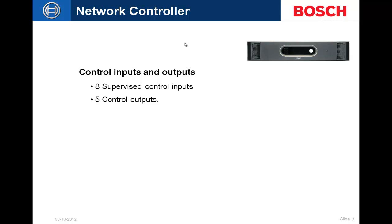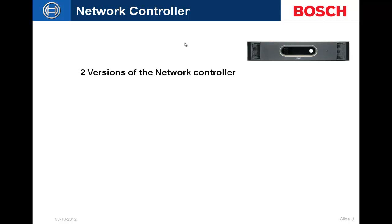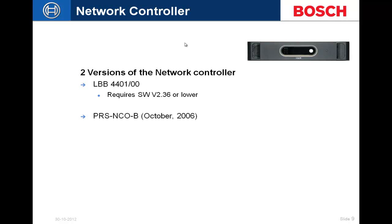The network controller has five control outputs, but not all five are freely available to program. The first three are open; the last two are dedicated to fault notifications. There are two versions: the 4401, an older version no longer available, and the NCOB, which is what's available now. Keep in mind that the newest hardware, version 21.05, comes with firmware version 3.5 or higher and cannot be downgraded to a lower firmware version.